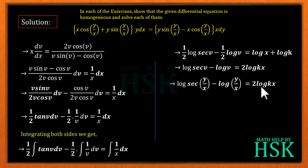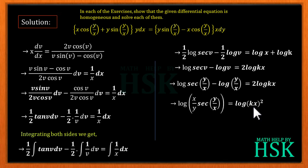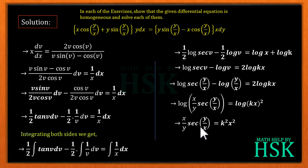Substituting back v = y/x: log|sec(y/x)| − log(y/x) = 2·log(kx). Combining the log terms on the left gives log[x/y · sec(y/x)] = log(kx)². Removing the logs: x/y · sec(y/x) = k²x².